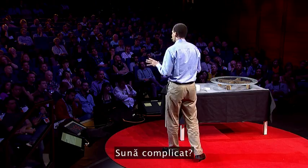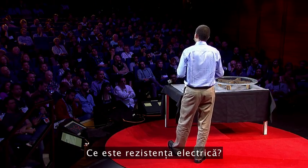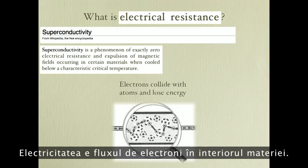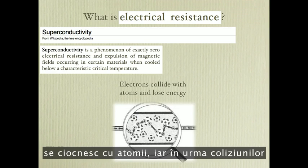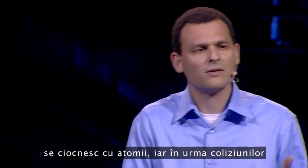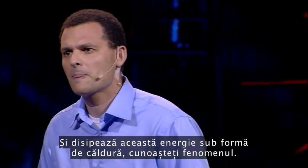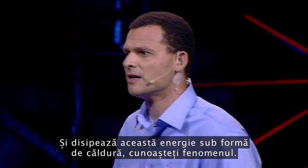That sounds complicated. But what is electrical resistance? Electricity is the flow of electrons inside the material. And these electrons, while flowing, they collide with the atoms, and in these collisions they lose a certain amount of energy, and they dissipate this energy in the form of heat.